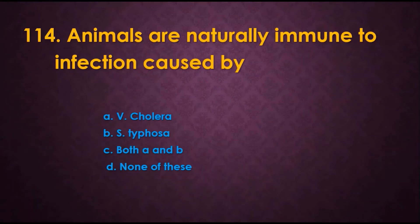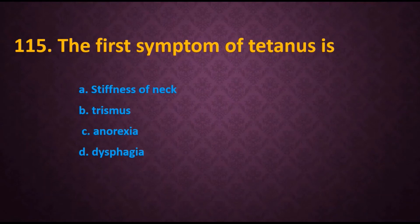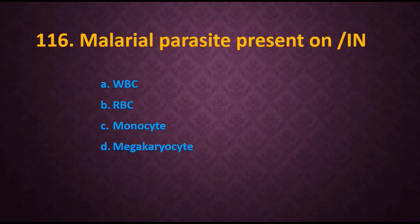Question 114: Animals are naturally immune to infection caused by — options are: A) Vibrio cholerae, B) Salmonella typhosa, C) both A and B, D) none of the above. The answer is both A and B. Question 115: The first symptom of tetanus is — options are: A) stiffness of neck, B) trismus, C) anorexia, D) dysphagia. The answer is trismus, which is the first symptom seen in tetanus infection.